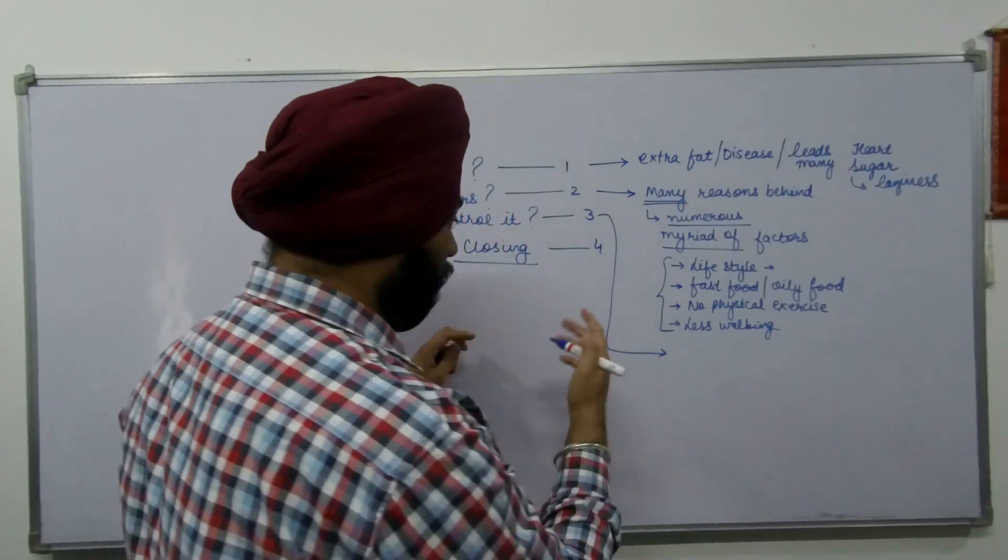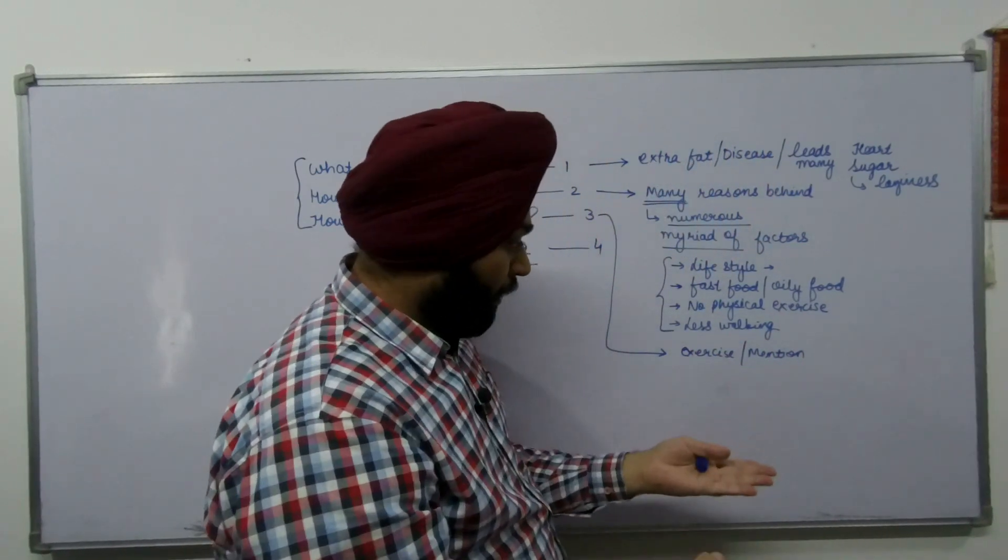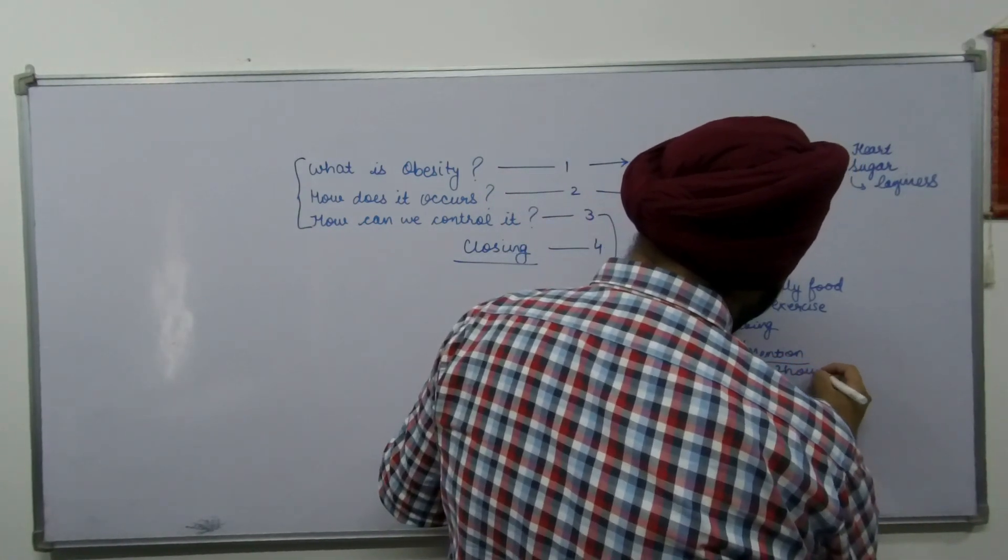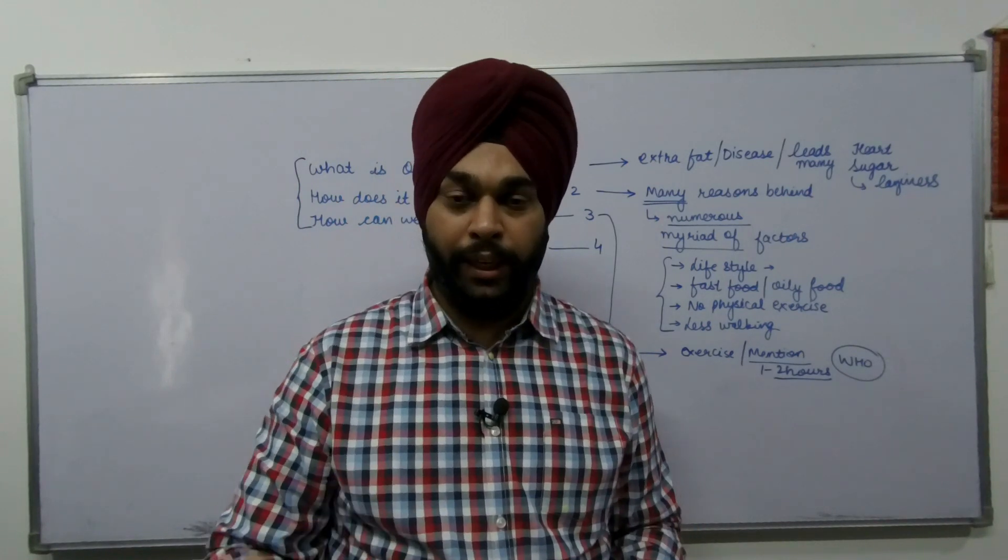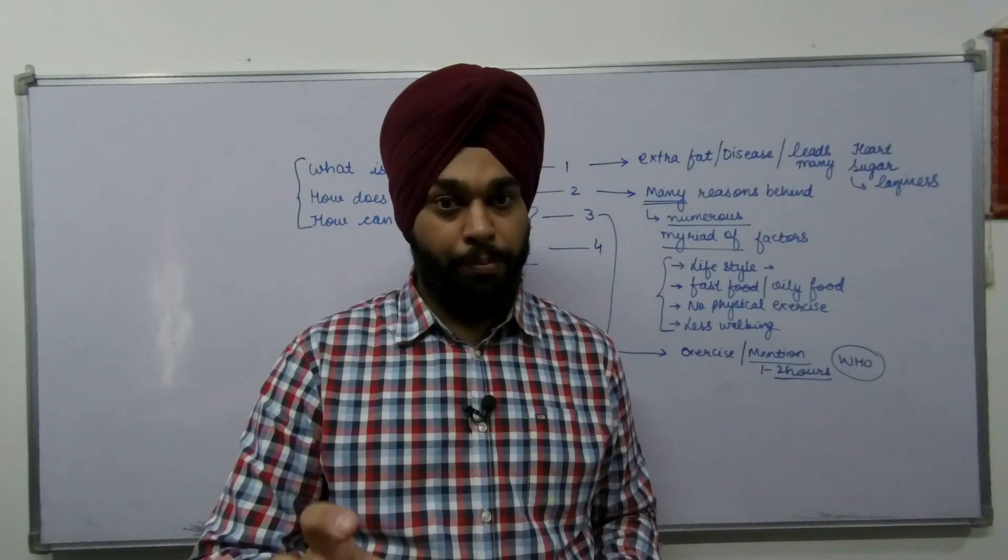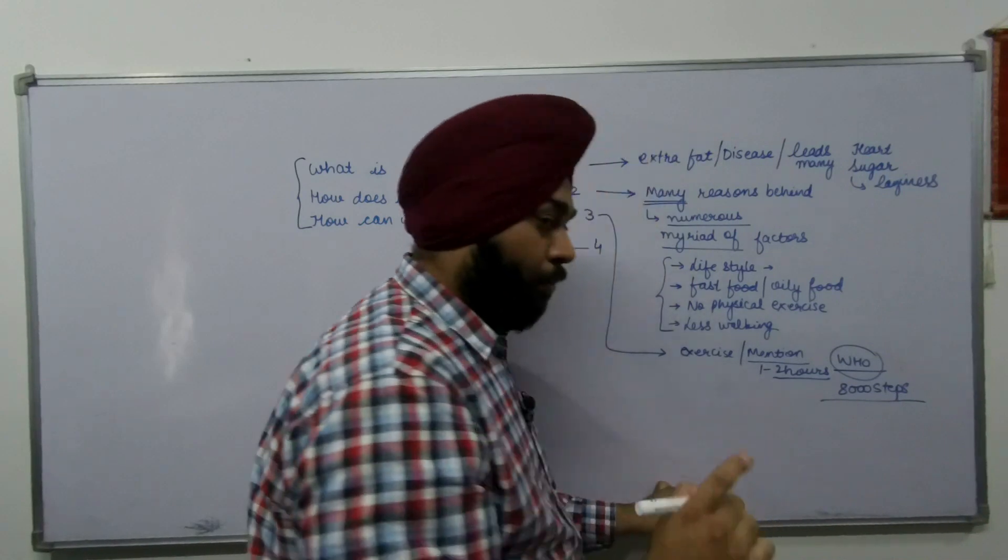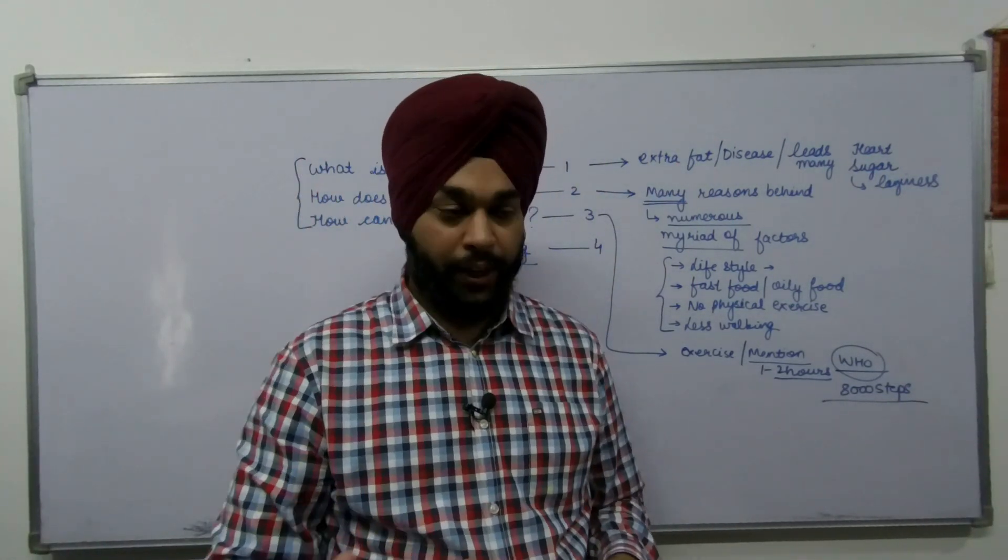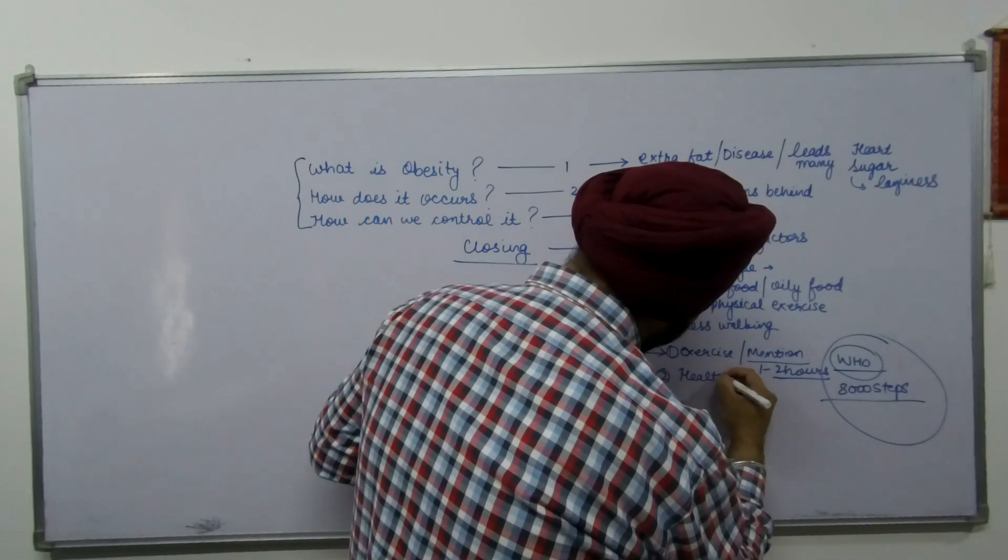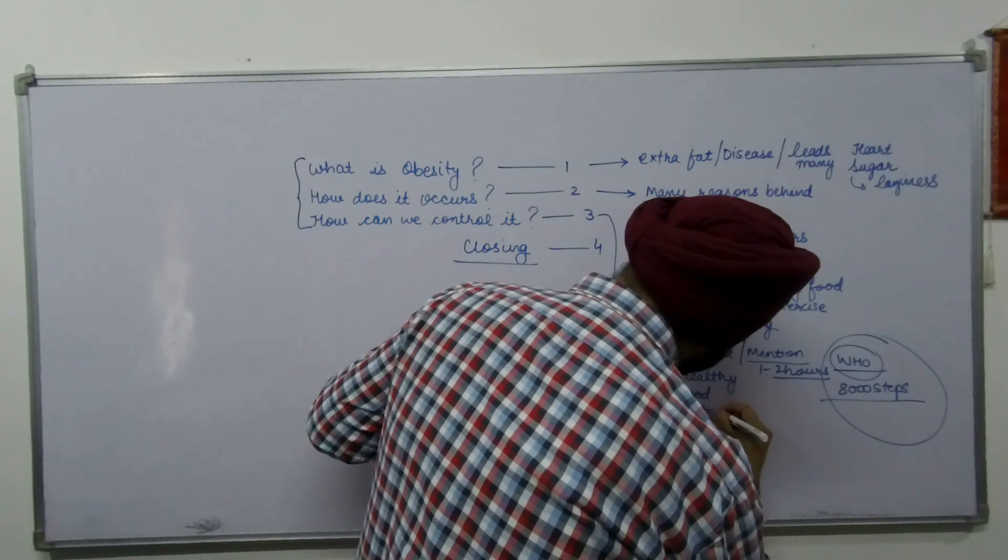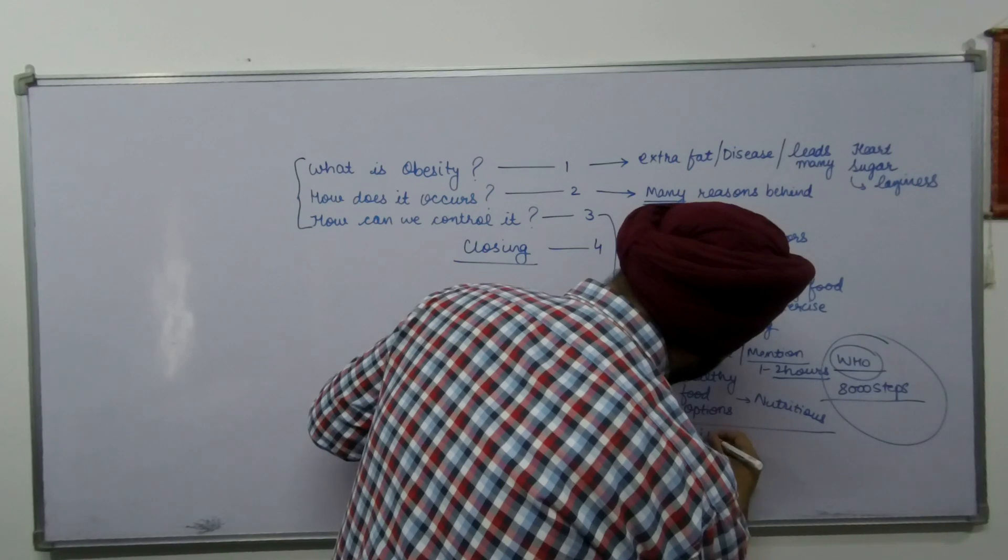Now the third para: How can we control it? There are many things that you can do to control obesity. The first one is exercise. You can also mention your opinion about how many hours a person should do exercise - one to two hours every day. You can also suggest an example that the World Health Organization suggests that a person must take at least 8000 steps in one day in order to remain fit. WHO, World Health Organization, suggests that 8000 steps minimum for every person in one day in order to remain fit. This is a true example for this essay. The first one is exercise. A person can choose healthy food options, nutritious food, eat more and more fruits and raw vegetables.